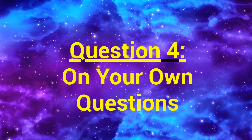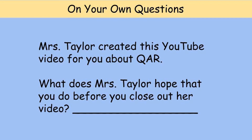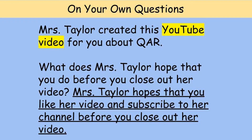The last type of question is called On Your Own questions. When answering On Your Own questions, you have to read the passage, think about what the author is trying to tell you, and try to figure out the answer — but find those clues, and that will help your teacher understand exactly what you are thinking. Mrs. Taylor created this YouTube video for you about QAR. What does Mrs. Taylor hope that you do before you close out her video? If you have watched YouTube videos, you know what they say: if you liked today's video, click the like button, and if you haven't subscribed to the channel, click the subscribe button so you don't miss out on a single adventure. If you said that Mrs. Taylor hopes you like her video and subscribe to her channel, then you are correct. I highlighted the words 'YouTube video' because I know from watching YouTube videos that's usually what they ask you to do.